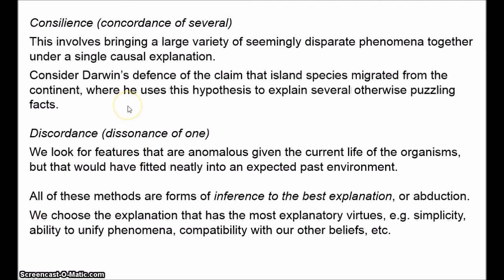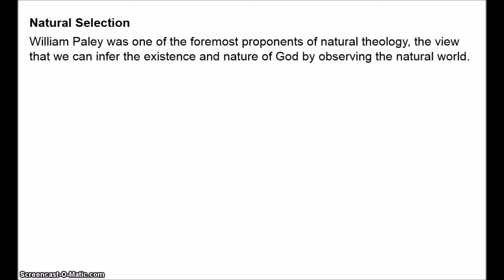Let's turn to Darwin's most important contribution: natural selection. Gould suggests that in developing his theory, Darwin was heavily influenced by William Paley, one of the foremost proponents of natural theology — the theory that we can infer the existence and nature of God by observing natural phenomena. The guiding principle was that nature is rational and harmonious and displays the work of a benevolent creator. In the 1800s, there were two distinct traditions in natural theology. The first, more associated with continental Europe, argued that we should focus on the overall order and symmetry found in the universe and living things, examining organisms as wholes exhibiting laws of form and type.